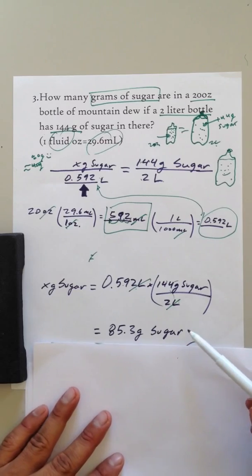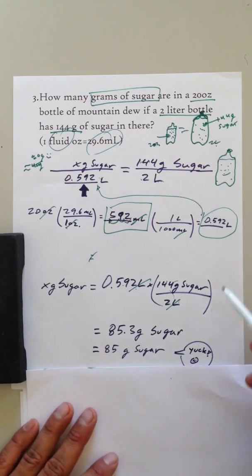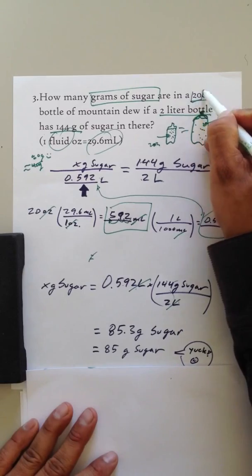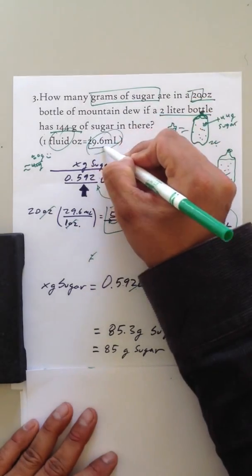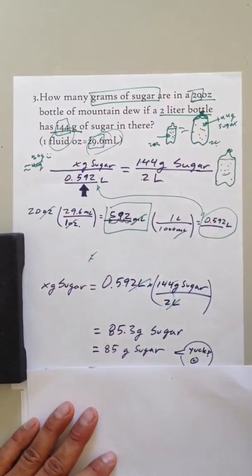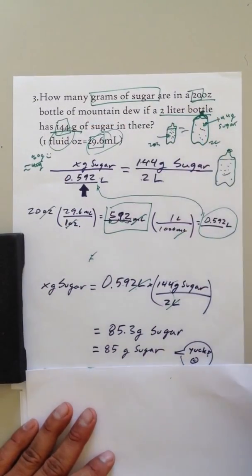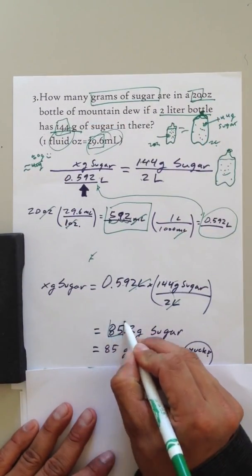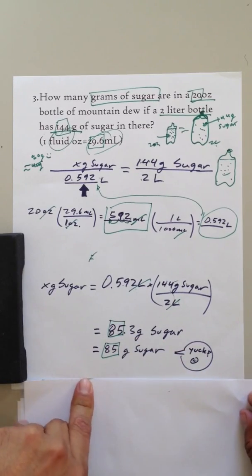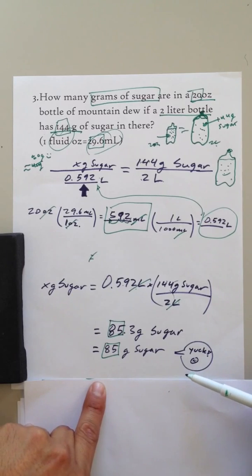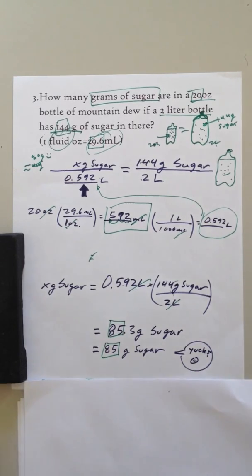85.3 grams of sugar. And we have, our answers are about, we are not sure that that's one, two significant digits, but these are three, these are three. So let's just assume that that's two significant digits. Our answer should be around 85 grams of sugar. Yuck. So that's a lot of sugar in there. Disgusting. Don't drink it.